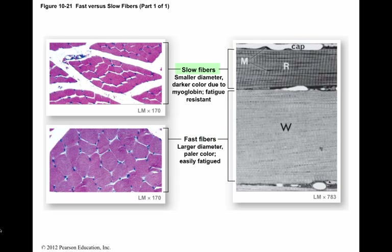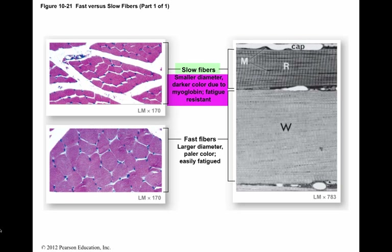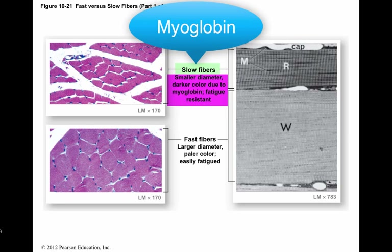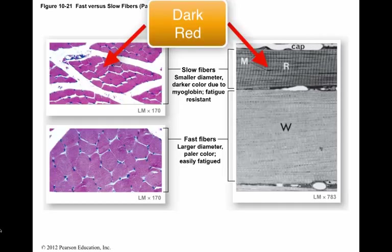Slow fibers have only about half the diameter of fast fibers and take three times as long to reach peak tension after stimulation. They are able to continue contracting longer than a fast fiber because of the extensive capillary network that supplies oxygen to support the activity of the mitochondria. Slow fibers also contain the red pigment myoglobin, which is similar to hemoglobin. Myoglobin helps to deliver oxygen molecules. Skeletal muscles dominated by slow fibers are dark red because slow fibers have both an extensive capillary supply and a high concentration of myoglobin.